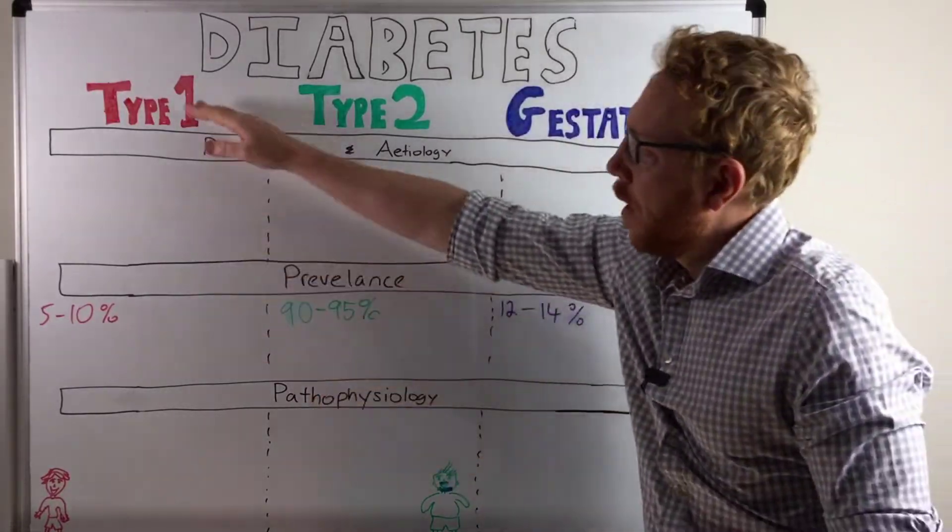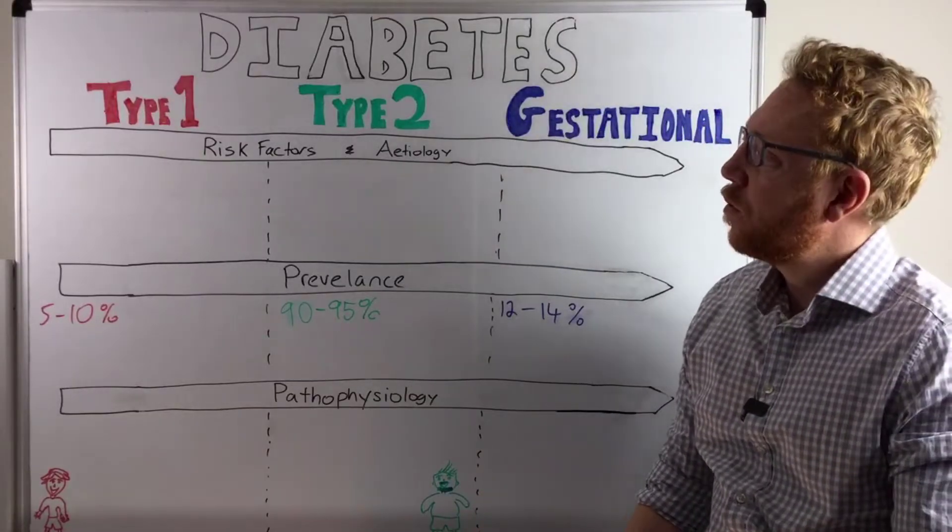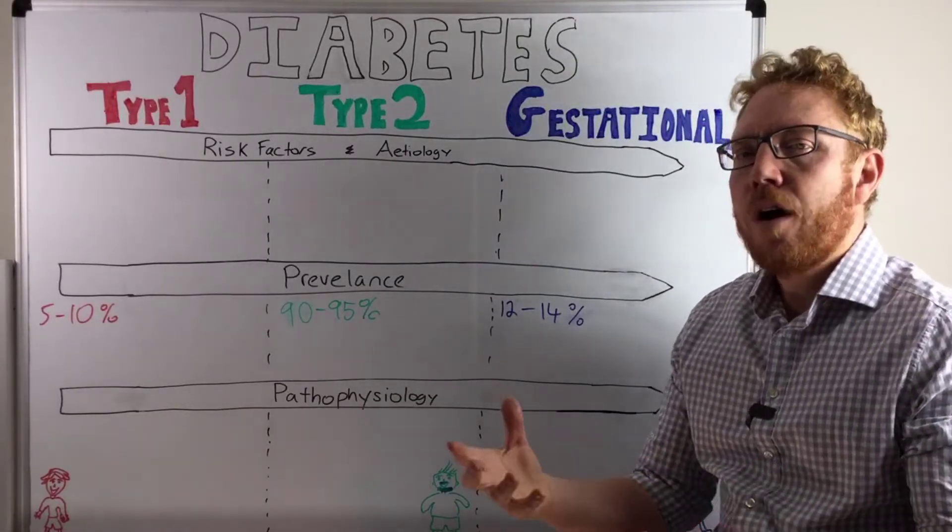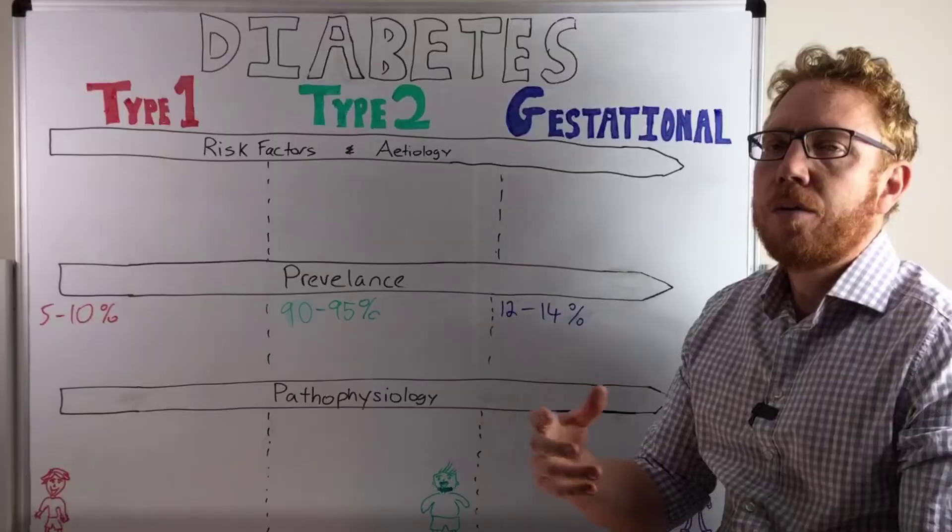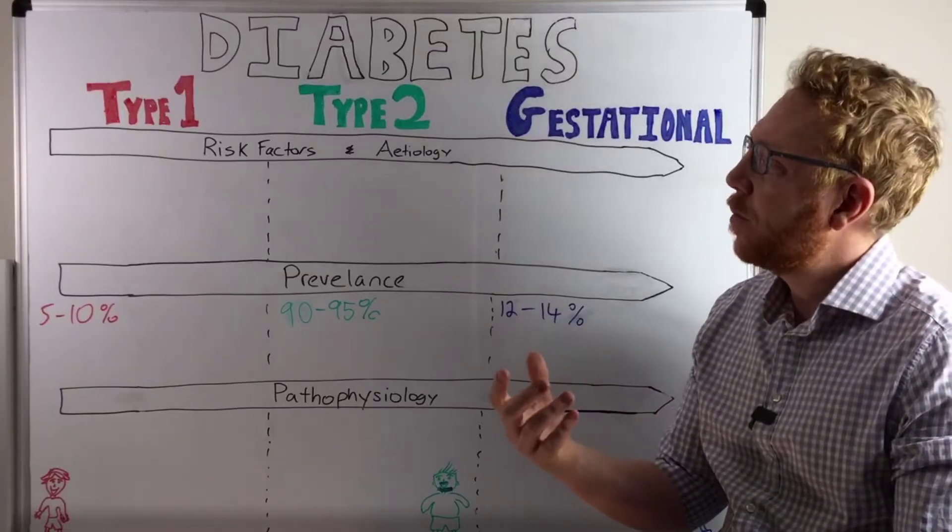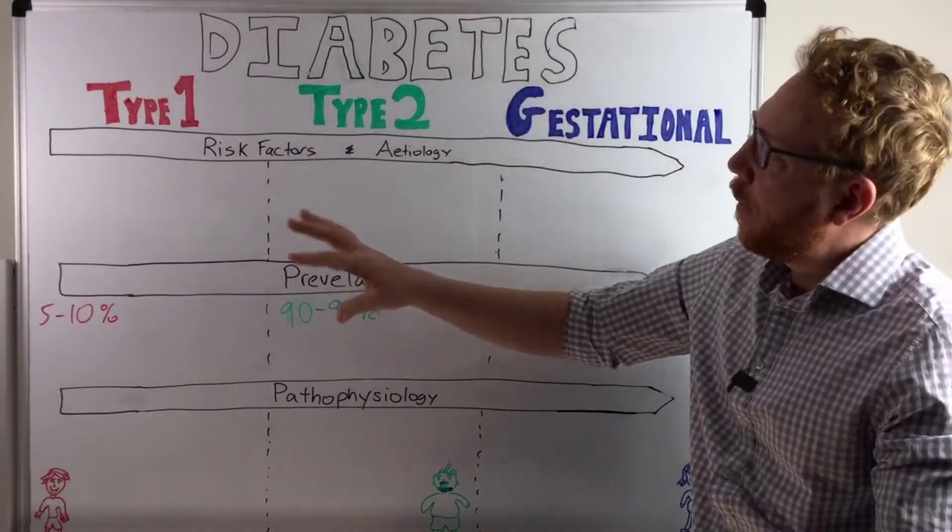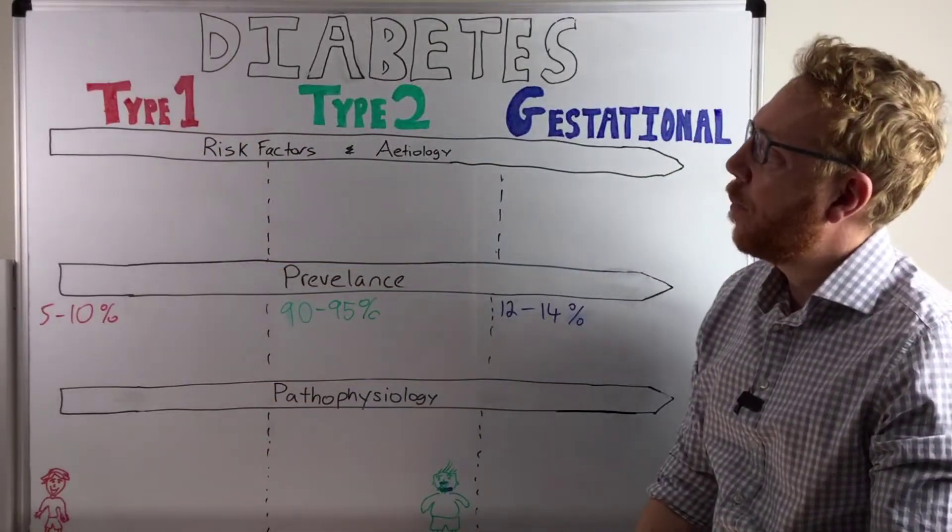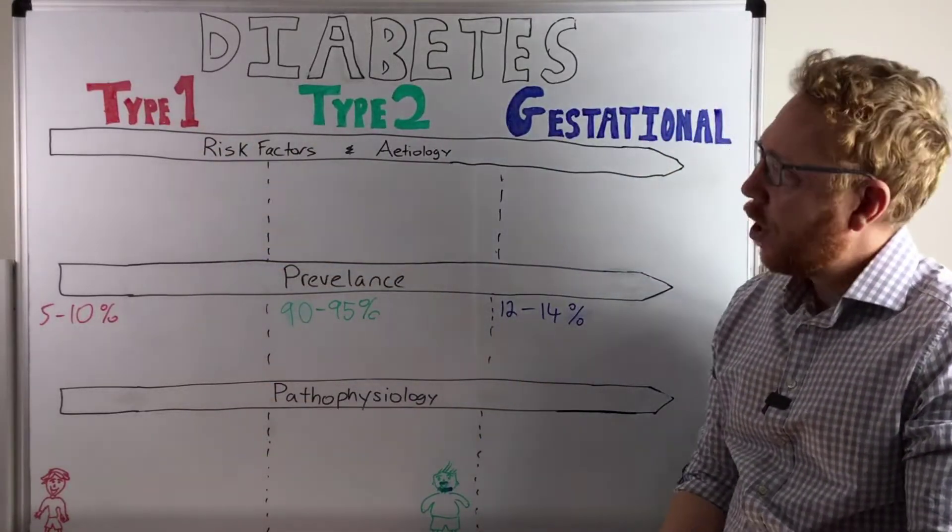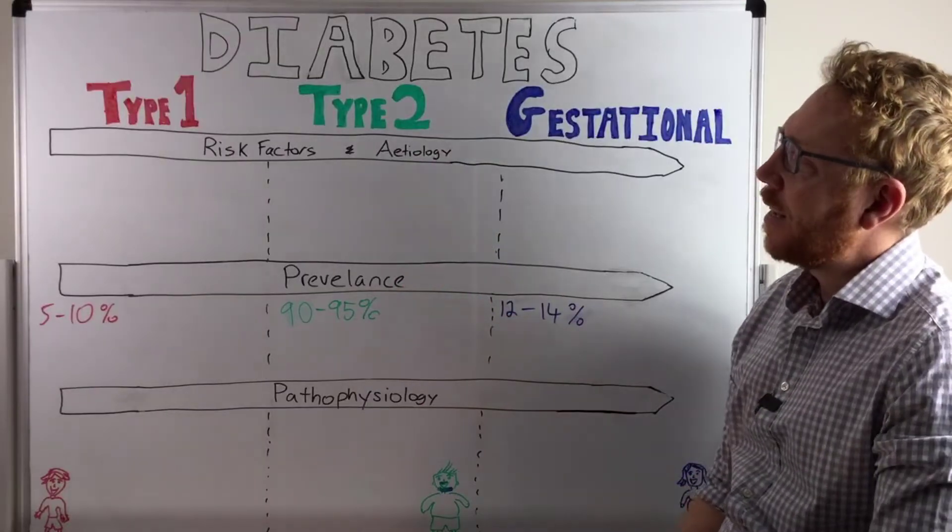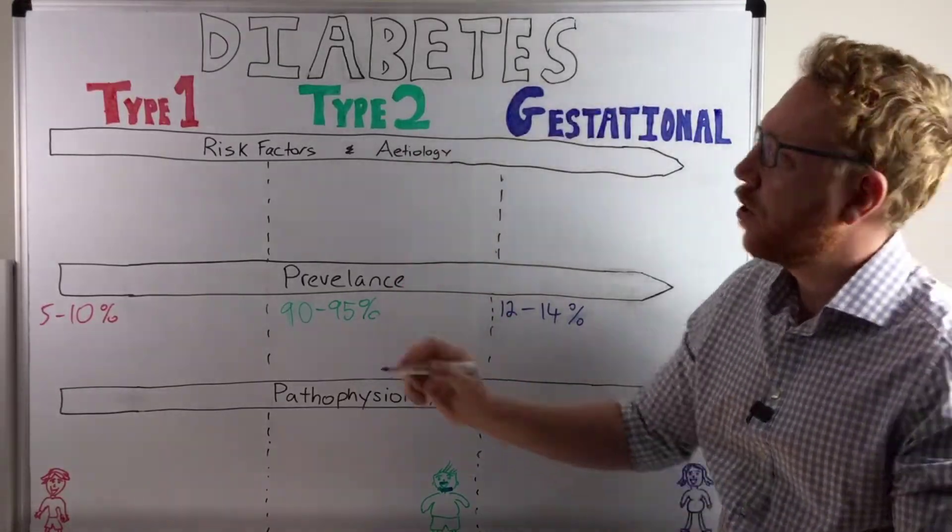Let's start off with type 1. Type 1 traditionally was referred to as juvenile or child or sometimes insulin dependent diabetes mellitus or IDDM. But probably a better term is just to keep it as type 1 diabetes. In terms of the etiology, essentially what's happened is beta cell destruction.